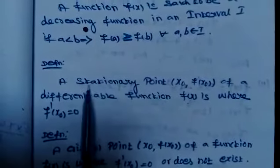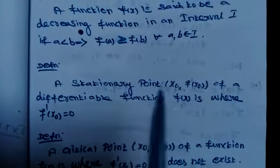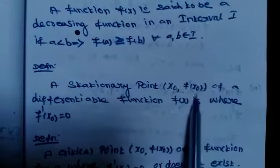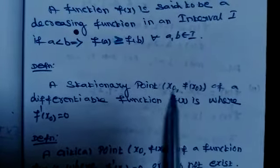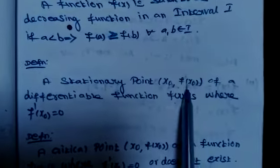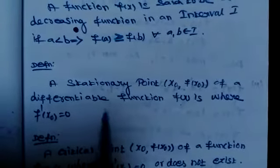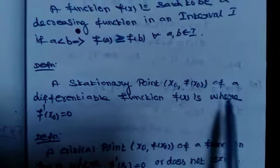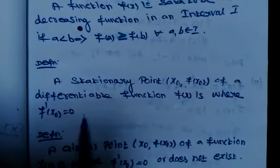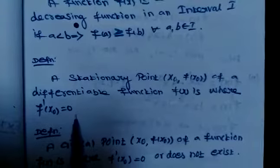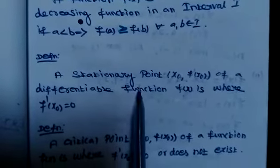Next definition: stationary point. A stationary point is (x₀, f(x₀)) of a differentiable function f(x), where f'(x₀) equals 0. This is called a stationary point.